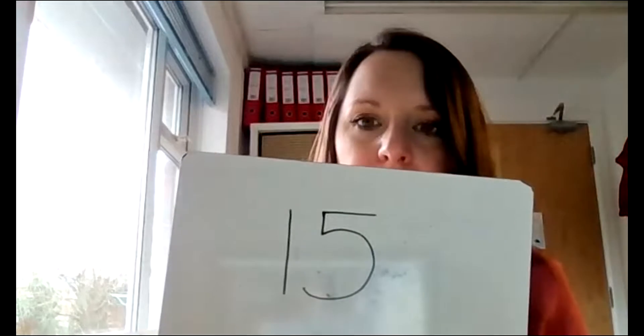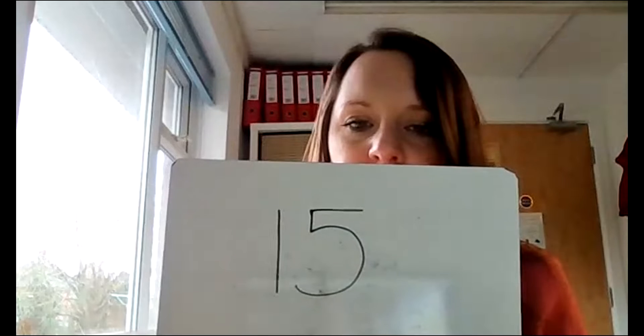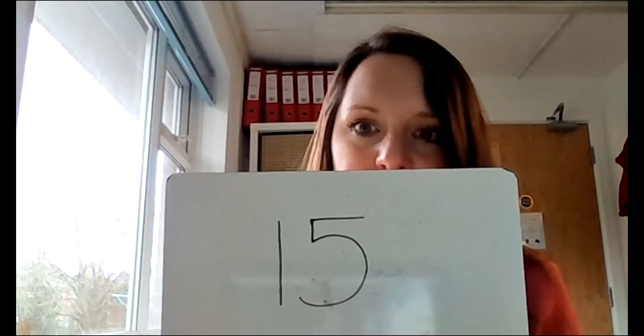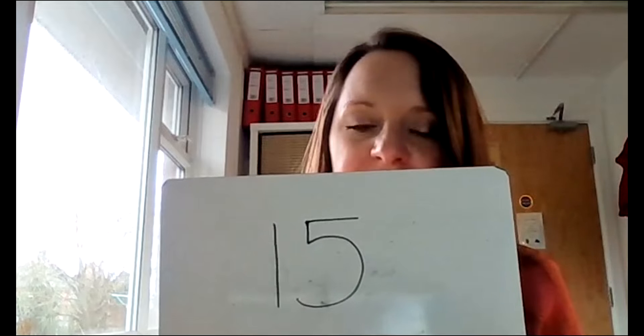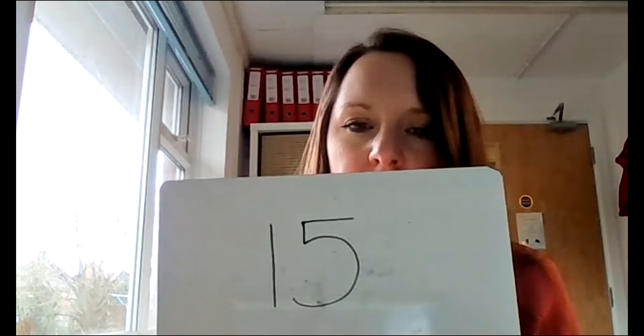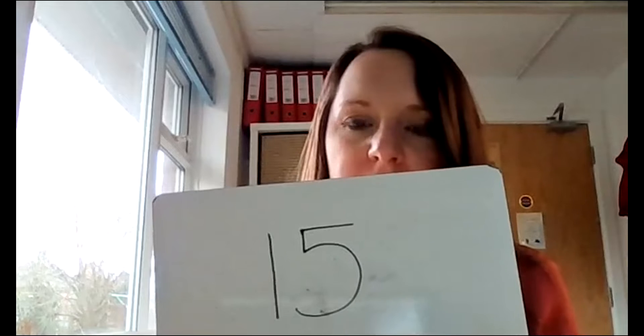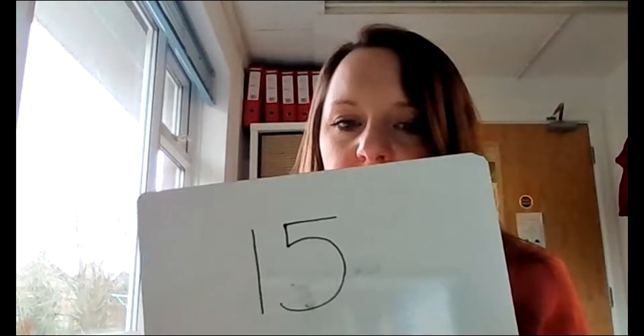I'm going to write a number here. It's going to have some tens in it and some ones. I wonder if you'll be able to tell me what my number is and how many tens and ones it has in it. Are you ready? What number do I have here? What is this number made up of — how many tens and how many ones? I hope you said that this is the number 15, and 15 is made up of one ten and five ones.